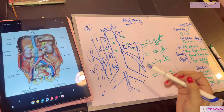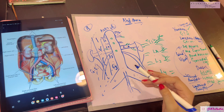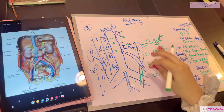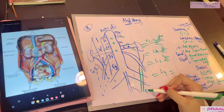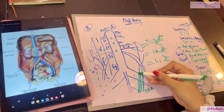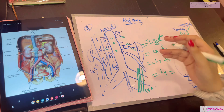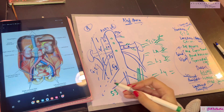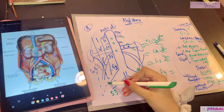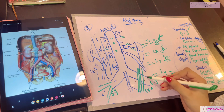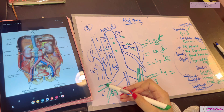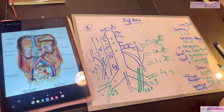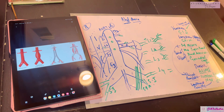The common iliac arteries arise at L4 when the aorta terminates, slightly left of the median plane. An important point: the left common iliac artery is crossed by the inferior mesenteric artery, which then becomes the superior rectal artery. For the vein, the superior rectal vein becomes the inferior mesenteric vein. Both common iliac arteries lie in front of the sacroiliac joints and terminate by dividing into the external iliac and internal iliac arteries on each side.